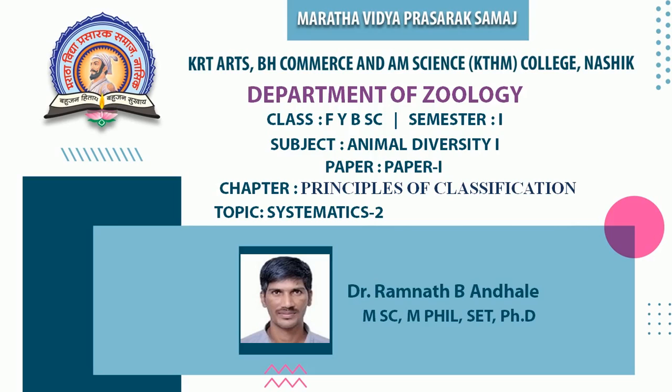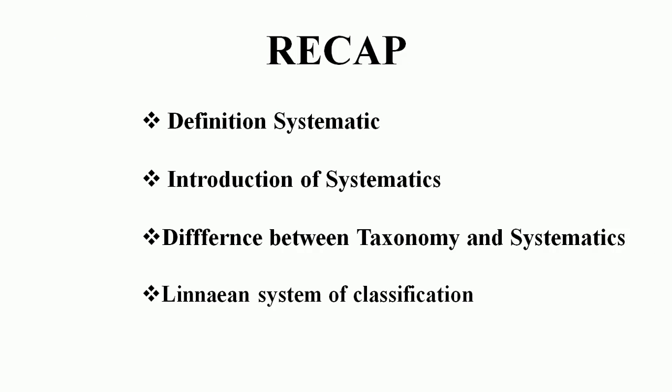Before we discuss Systematics Part 2, let us go back to the previous lecture. In the previous lecture we discussed the definition of Systematics, the introduction of Systematics, the difference between the words Taxonomy and Systematics, and the Linnaean System of Classification with its 6 levels of classification.